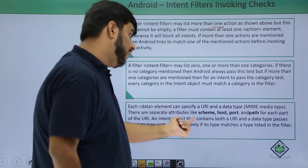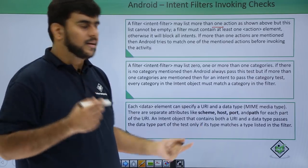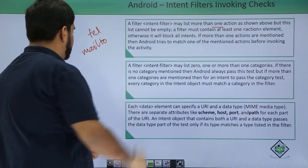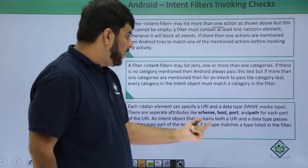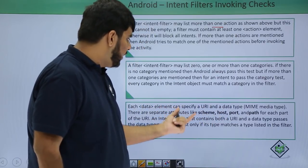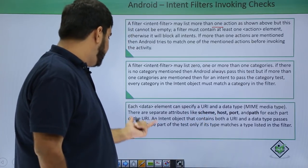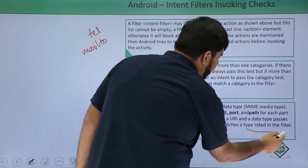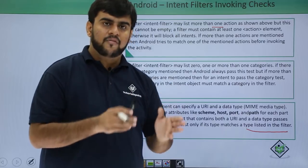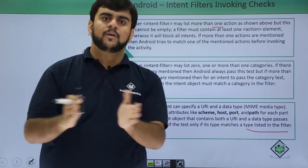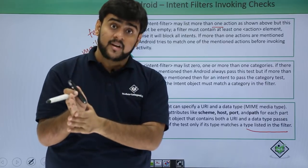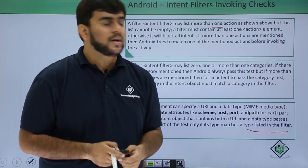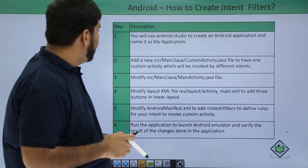And in the data we specify a URI like we did the tel or mailto. These are having separate attributes for each part of the URI. An intent object that contains both a URI and a data type passes the data type part of the test, but only if it matches the type listed in the filter. So we are actually having some predefined preset values. If our application is matching that value then we pass the test and we are able to have our intent filter applicable.